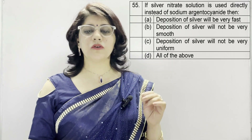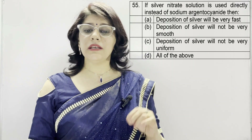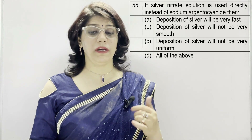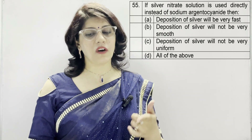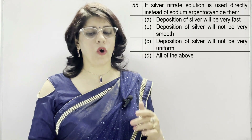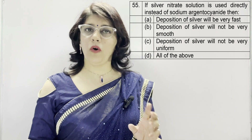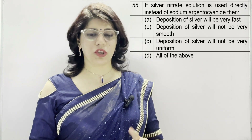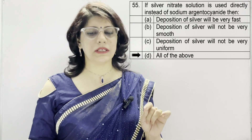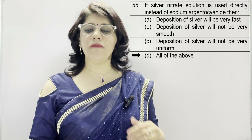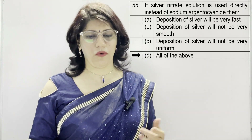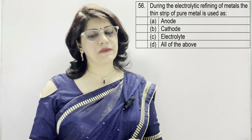In question number 55: if silver nitrate solution is used directly instead of sodium argentocyanide, then — A: deposition of silver will be very fast, B: deposition of silver will not be very smooth, C: deposition of silver will not be very uniform, D: all of the above. The correct option is D — if used directly, deposition will be very fast, not smooth, and not uniform.